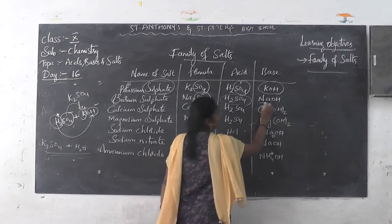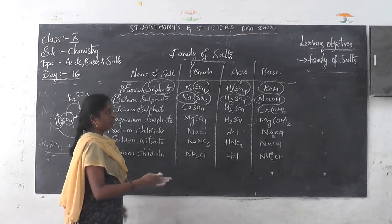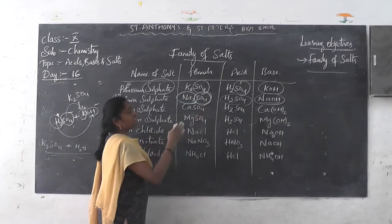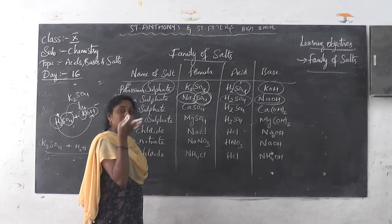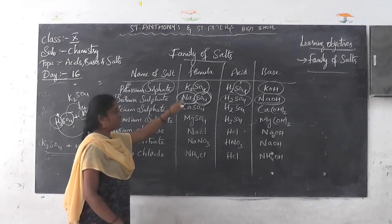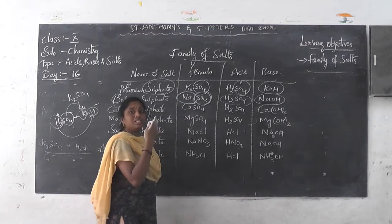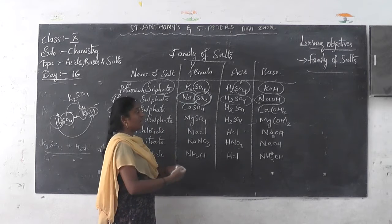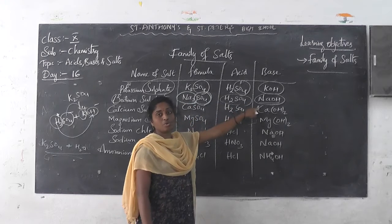What is the base here? Sodium hydroxide. Please understand very clearly — the cation formation is sodium, so it comes under sodium hydroxide. And the anion is sulphate, so it belongs to the sulphate family. The acid present in the sulphate family is sulphuric acid — H2SO4. And the base is sodium hydroxide.